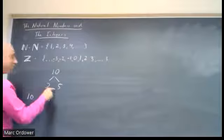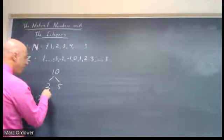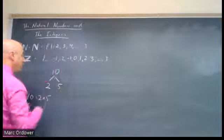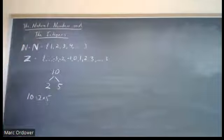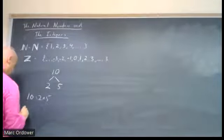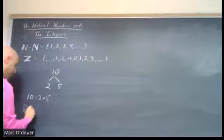So two and five have no factors other than one and themselves. So two, the only factors two has are one and two. The only factors in the natural numbers it has are one and two. And five, the only factors it has in the natural numbers are one and five. So a prime number, so here's a definition: prime number